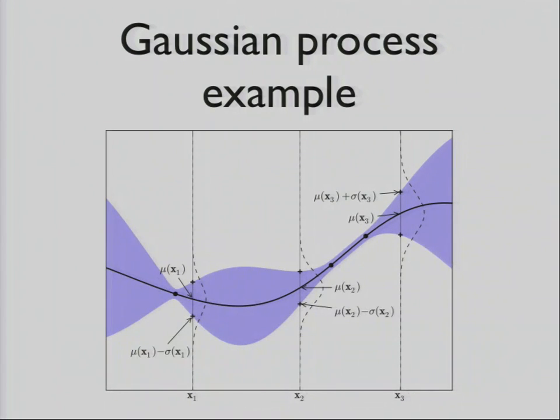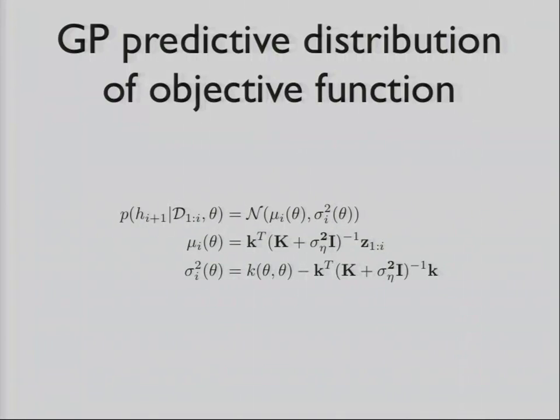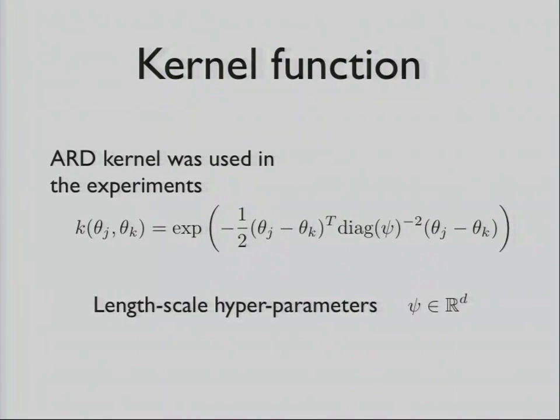If you look at this function at a particular point, it's essentially a mean and a variance. It's a univariate Gaussian. So any way you plug in theta for a certain h_i plus one, you basically get a univariate Gaussian. The kernel function we used was just a straight up ARD kernel with a length scale of hyperparameters, which you could estimate, but we just kind of set them intuitively.